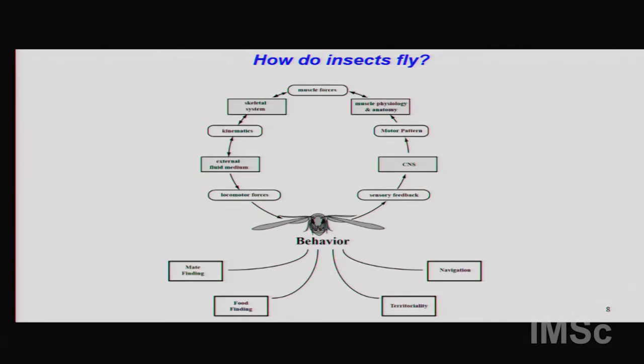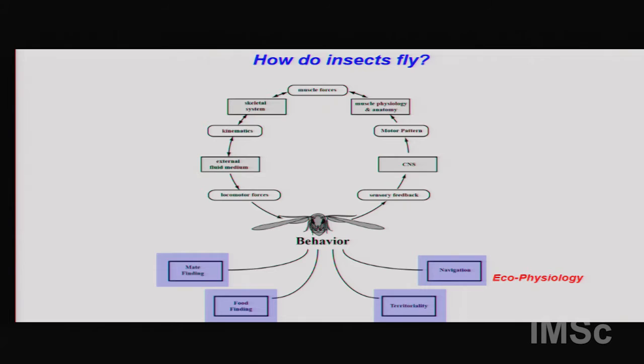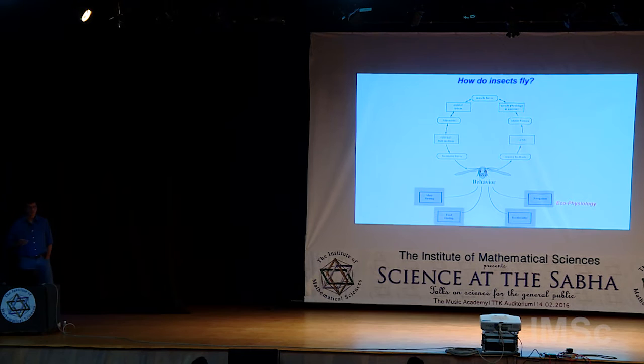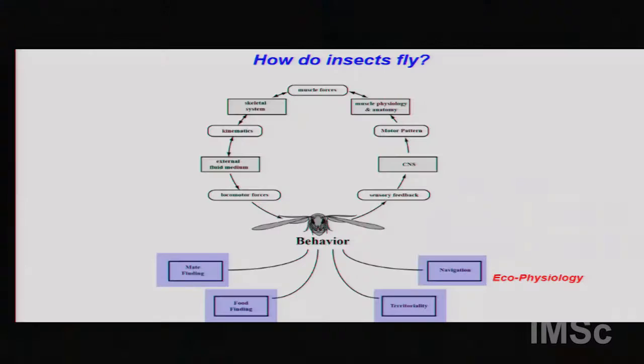My lab is behavior-centric. We look at behavior in the natural context and ask what is going on out there. These could include mate finding, food finding, and territoriality. You may have noticed house flies chasing other house flies — they are very brutal chasers. Observe closely next time you see a bunch of house flies around.